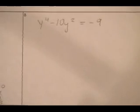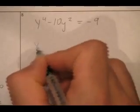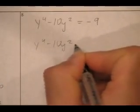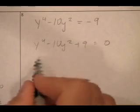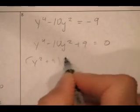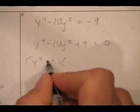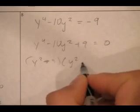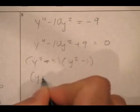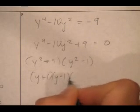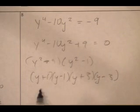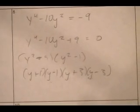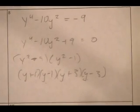One more: y to the fourth minus ten y squared plus nine equals zero. Factor as (y squared minus nine)(y squared minus one) equals zero. Each is a difference of two squares, so factor further to get (y plus three)(y minus three)(y plus one)(y minus one) equals zero. There are four solutions: y equals positive one, negative one, positive three, negative three.